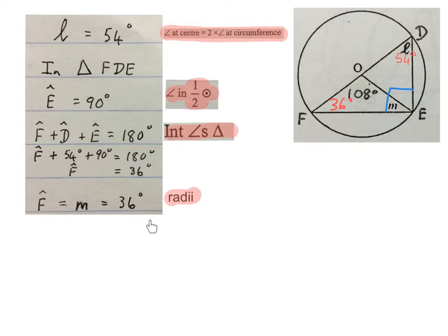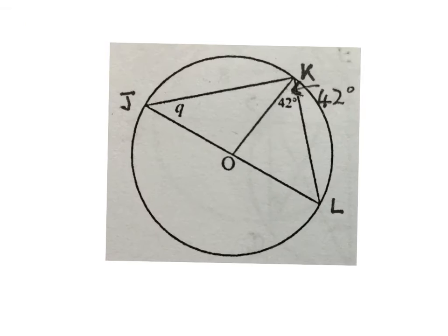I write it in on the sketch. Then F is equal to M, which equals 36 degrees. This angle at F is the same as M because of the radii — the two radii are equal so the angles opposite them will be equal.